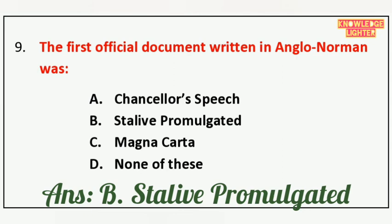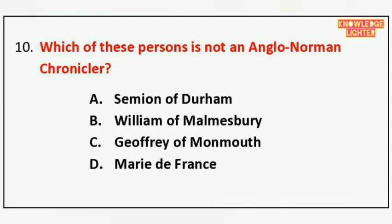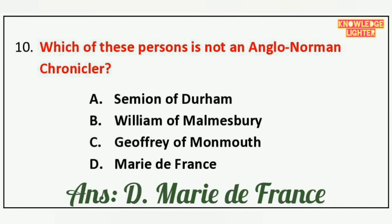Your next question is: Which of these persons is not an Anglo-Norman chronicler — option A Semyon of Durham, option B William of Malmesbury, option C Geoffrey of Monmouth, option D Marie de France. And the correct answer is option D Marie de France.